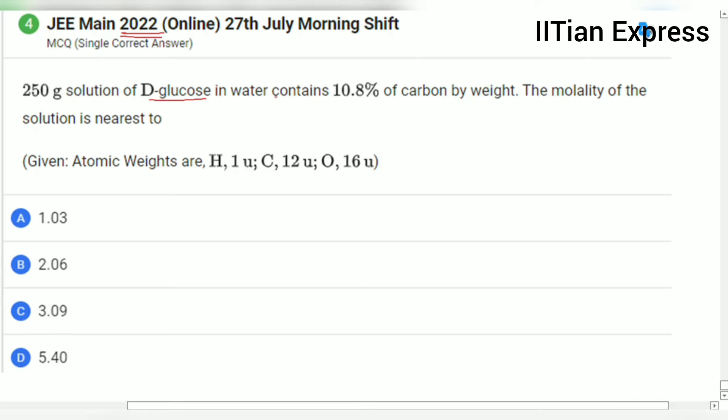D-glucose in water contains 10.8% of carbon by weight, so here the molarity of the solution is nearest to. We are supposed to calculate the molality of the solution.